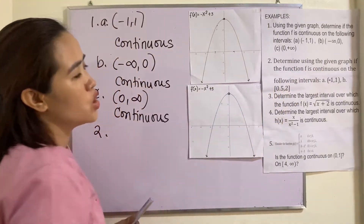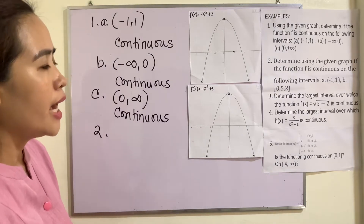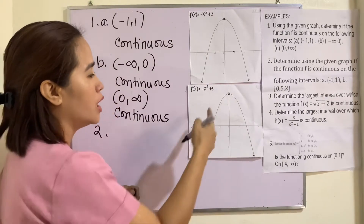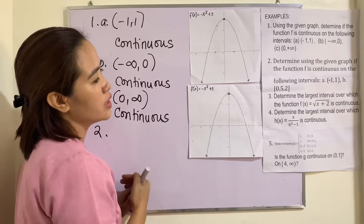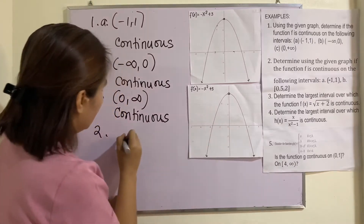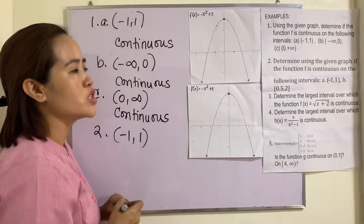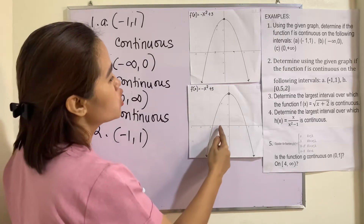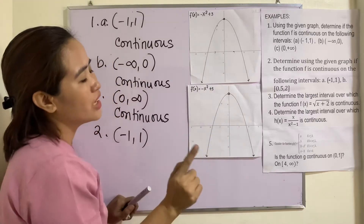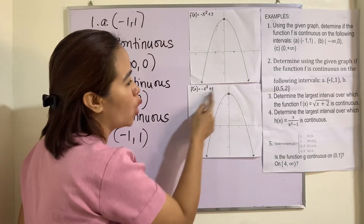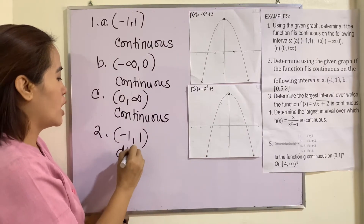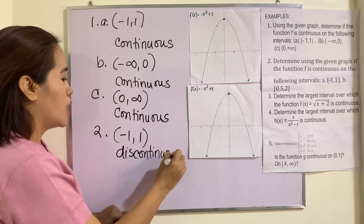Number 2: Determine using the given graph if the function f is continuous on the following intervals. A: negative 1 to 1. B: 0.5 to 2. As you can see here, there is a hole, meaning at x equals 0 the graph is undefined. If that is the case, we can say that negative 1 to positive 1 the graph is discontinuous. Because if we trace it from negative 1 to positive 1, we cannot do so without lifting our pen — we will be lifting our pen at this hole since the value of the function is undefined at this point.